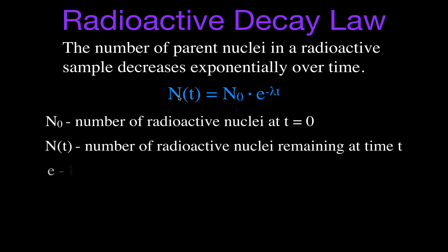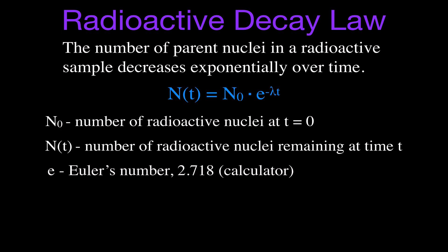E is Euler's number, which you should have a button for on your calculator; if not, you can approximate it as 2.718. E is raised to the power of negative lambda times t. Lambda is the decay constant, which we'll talk about in just a moment, and t is the time that occurs between when you had N₀ radioactive nuclei and when you measure Nₜ.